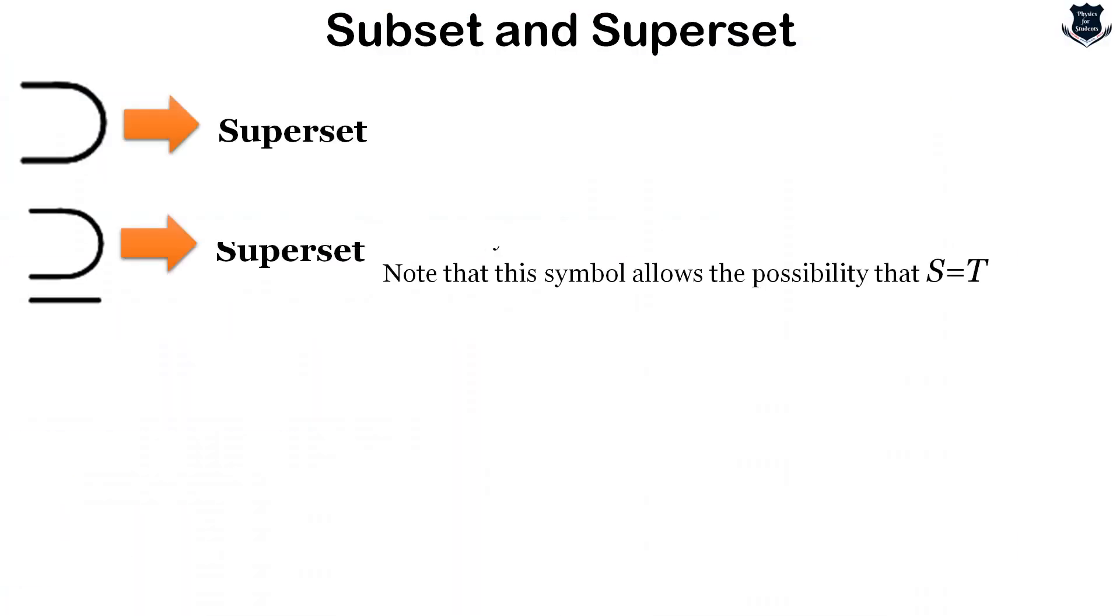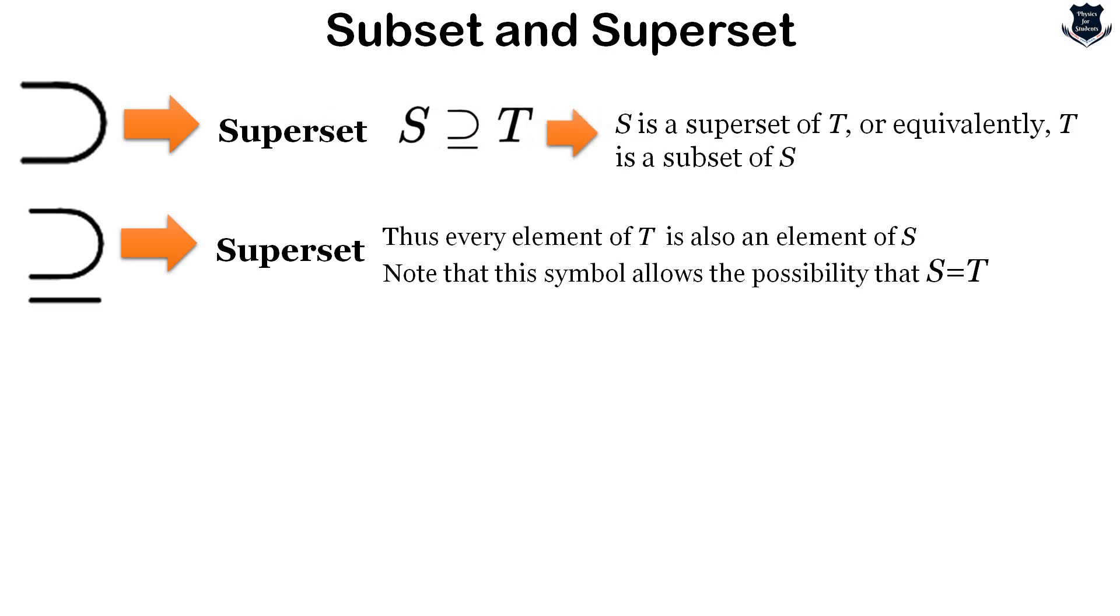Now we deal with subset and superset. This symbol is used to denote superset. S is a superset of T means T is a subset of S. The second symbol denotes every element of T is an element of S, which allows the possibility that S equals T.